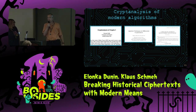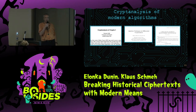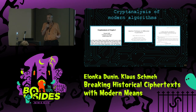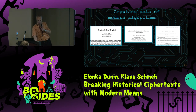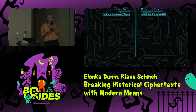We are talking about cryptanalysis today. At least some of you are familiar with cryptanalysis. Maybe you even have some expertise in breaking modern algorithms, such as RSA, AES, or DES. But cryptanalysis of modern algorithms is completely different from what we are covering today, because today we are talking about classical ciphers. Let's look at some of the differences.